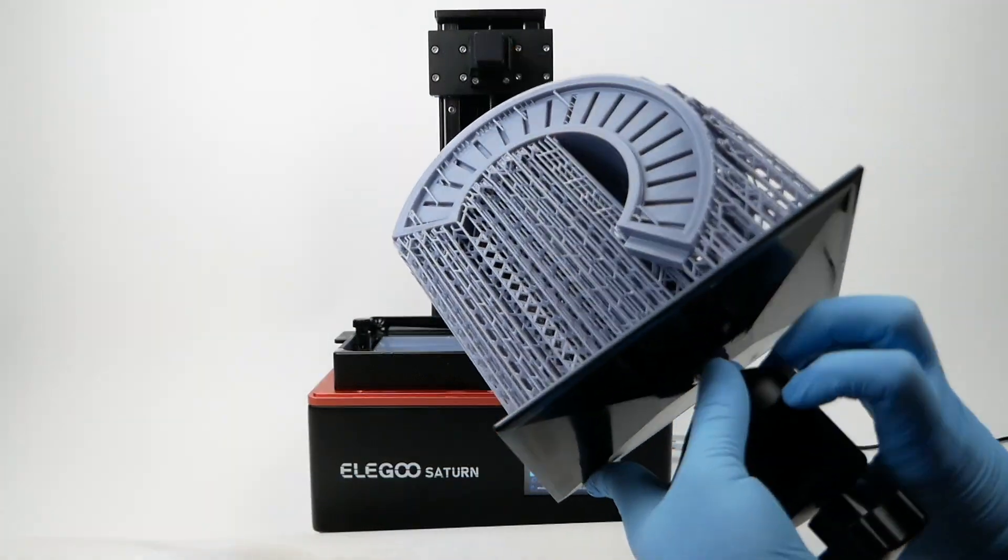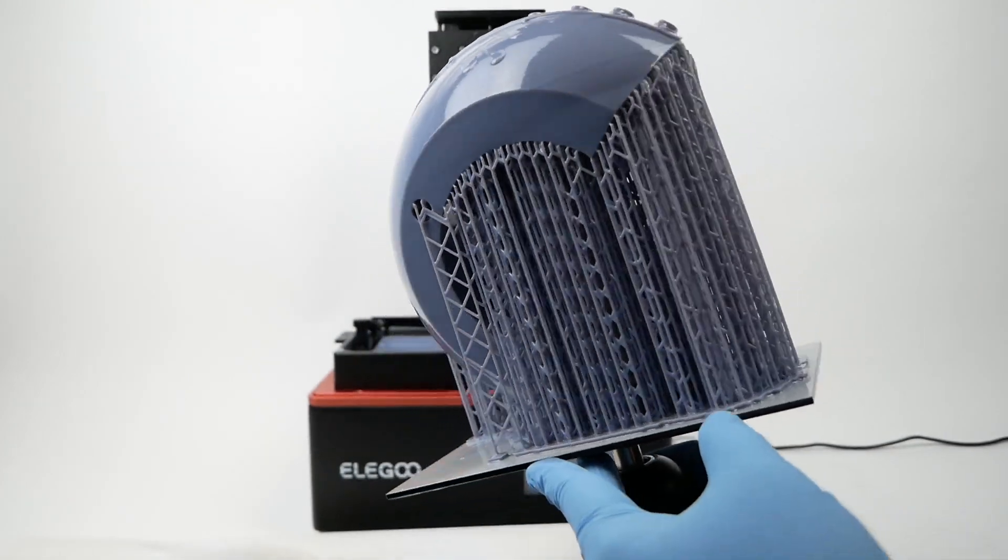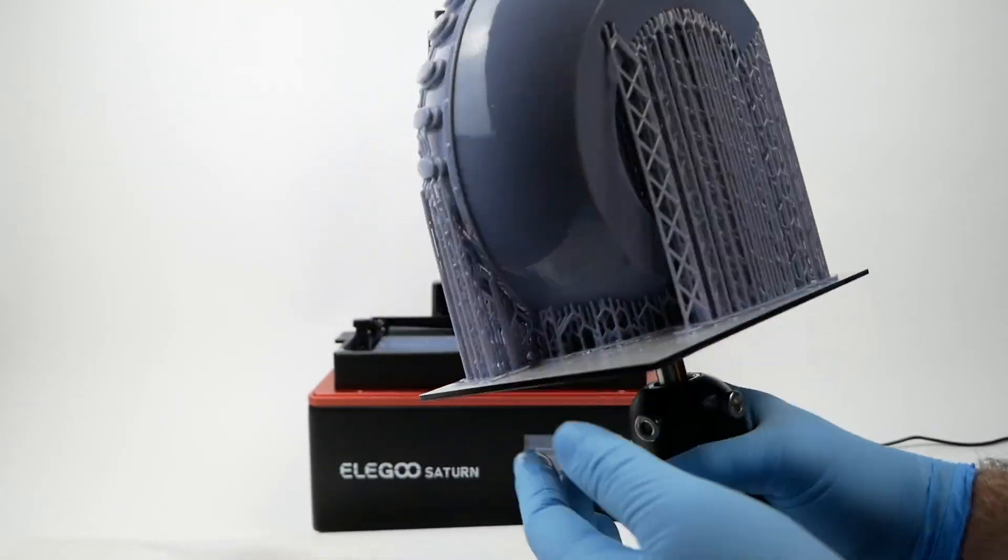At this point, you still have to remove the support materials, clean the model in alcohol, and cure the entire model with UV light or sunlight to completely harden it.